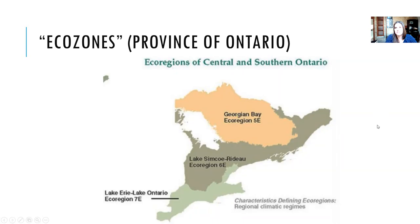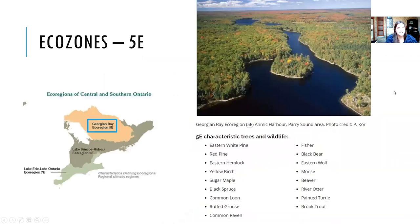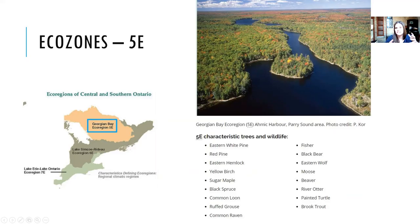Eco zone 5e covers the north shore of Lake Huron and eastern Georgian Bay. Characteristic tree species include white pine, red pine, eastern hemlock, yellow birch, sugar maple, and black spruce — all species that can take a snow load and grow in dense stands. They support megafauna like the eastern wolf, moose, and black bear. Algonquin Park and Killarney Provincial Park are great examples of this eco region.